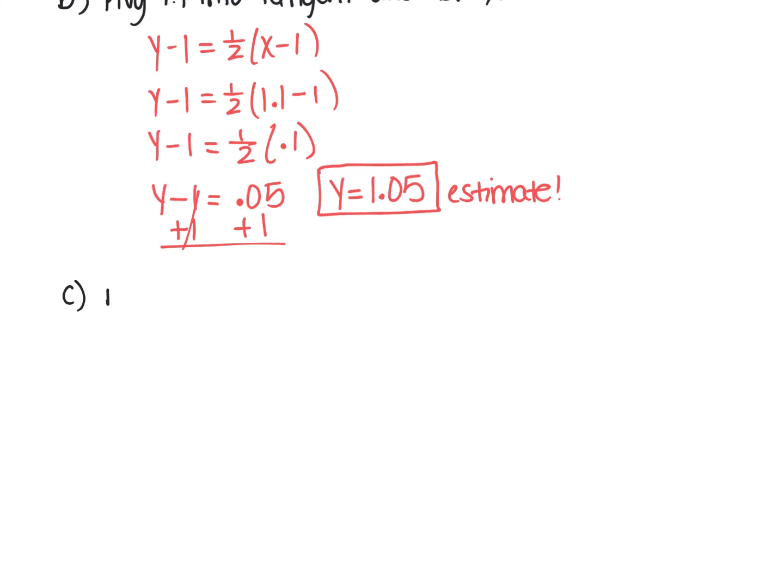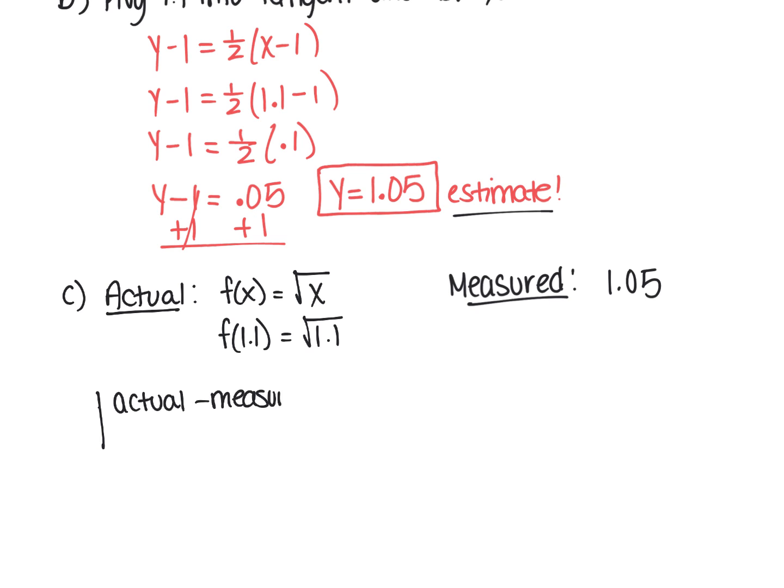So let's find the actual first. So the equation is f(x) is equal to the square root of x. And I want to find what it is at 1.1. So the square root of 1.1. Now, if you put that into the calculator, you're going to get a decimal. So I'm just going to say, let's leave it in this form now and we can round it later. Now the measured is our estimate that we just got here, so 1.05. So the formula is the absolute value of the actual minus the measured over the actual. And then we obviously have to multiply it by 100 to get a percentage.